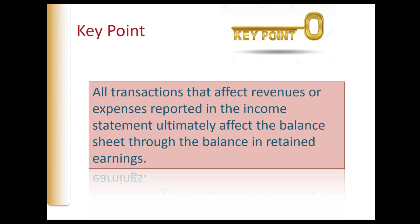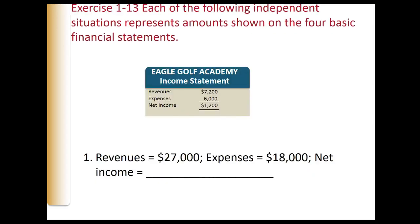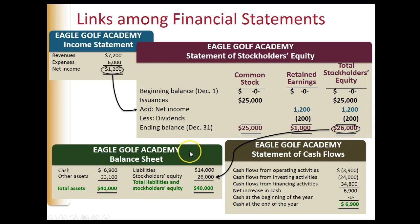All transactions that affect revenues or expenses are reported in the income statement, and they ultimately affect the balance sheet through the balance in retained earnings. Revenues minus expenses are the accounts put into the income statement, and that net income ultimately flows through retained earnings.